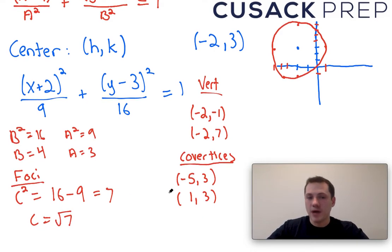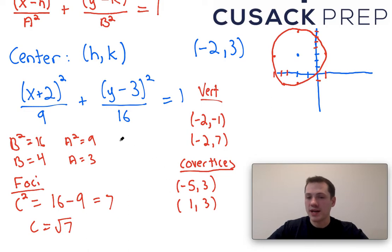Now when finding the foci, we change the same coordinate that we changed when finding the vertices. So we're going to change the coordinate that has the larger value under it. So once again, the larger value 16 is below the y coordinate. So as I look to fill in my foci, it's my y coordinate that needs to change from my center. My x coordinate remains the same in negative 2,